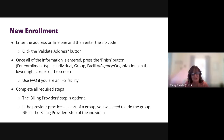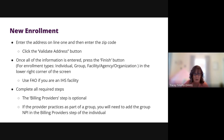When entering addresses, you can enter the street address and the zip code. When you click the Validate Address button, the remaining fields will be populated. If the system cannot validate the address, you will need to fill in the required information, click OK, and then Save. Do not click the Validate Address button more than once.